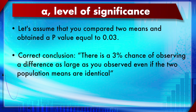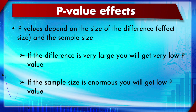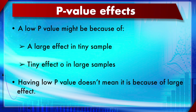P-values depend on two factors: effect size (the size of the difference) and sample size. A very large difference (large effect size) gives a very low p-value, and vice versa. An enormous sample size also yields a very low p-value. A low p-value might result from a large effect in a small sample, or from a tiny effect in a large sample — you cannot conclude which is true from the p-value alone.